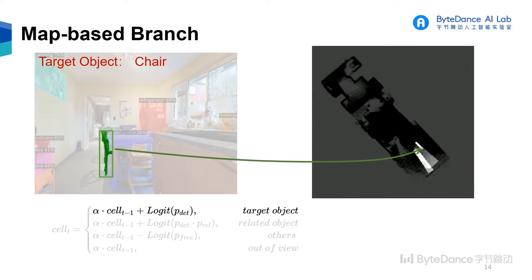For example, if a target object is detected but the confidence score is below the predefined threshold, we cannot determine whether it is a target. But we should get closer and check. So we update the cell by adding the logit of that confidence score.